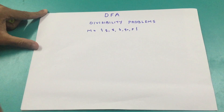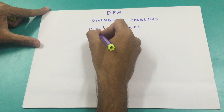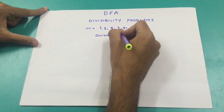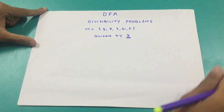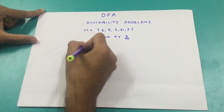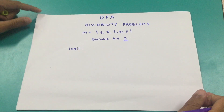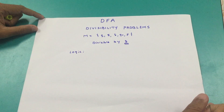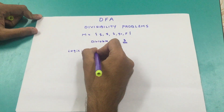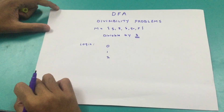For example, we have to find all the strings that are divisible by say three. For the logic, I'm going to use the remainder. Now for any number divisible by three, there are only three remainders that are possible: 0, 1, and 2. These are the only remainders that are possible.